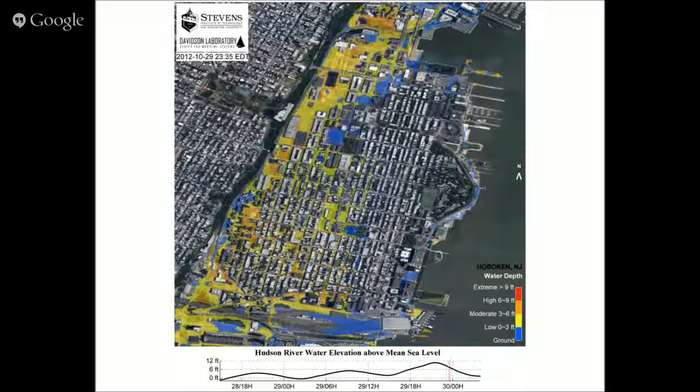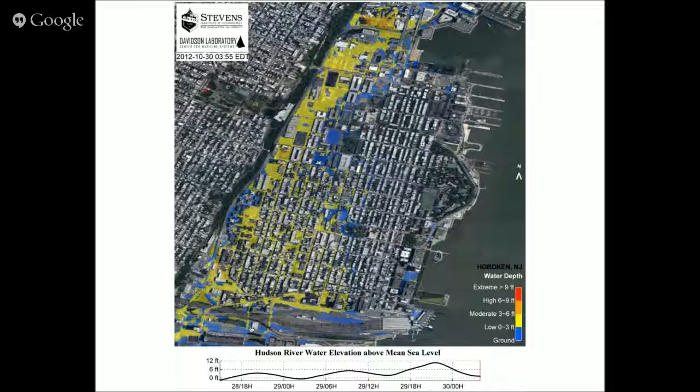The water came like this — this way and like this. So if you live here, no water, even though you were close to the waterfront. People who live here were looking this way and the water came behind them — that's why they don't understand the dynamics.